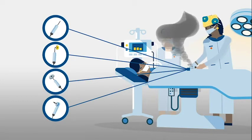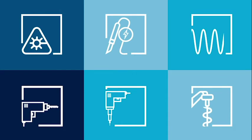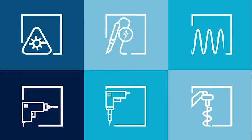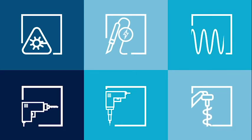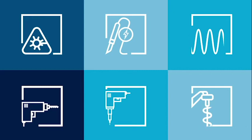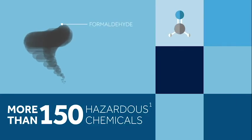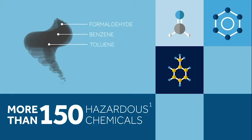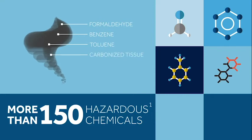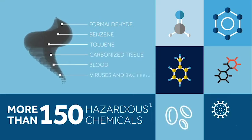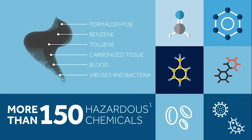Lasers, electrosurgery, ultrasonic devices, bone saws, drills, and high-speed electrical devices all create this smoke. More than 150 hazardous chemicals, including formaldehyde, benzene, toluene, particles of carbonized tissue, blood, potential viruses, and bacteria, are contained in these smoke plumes.